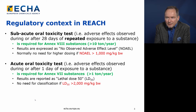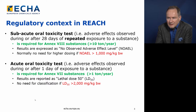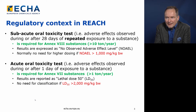Let's first take care of what is actually required under REACH. Subacute oral toxicity test is required whenever the tonnage is above 10 tons per year, whereas acute oral toxicity test is required for all substances that are registered, meaning when the tonnage is above one ton per year, acute oral toxicity test or similar data is required. With the subacute oral toxicity test, one result of that is a NOAEL — a no observed adverse effect level value — which is used for setting the DNEL.